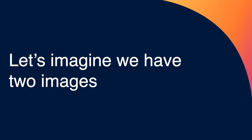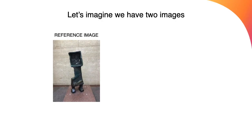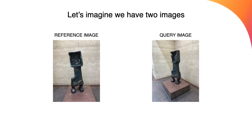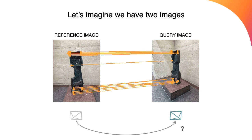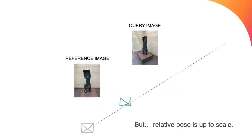Let's imagine we have two images, the reference and the query, and we want to compute the relative pose between them. Following a classical approach, we could find keypoint correspondences and compute the essential matrix from which we can obtain the relative rotation and translation. However, that relative pose is up to scale — we don't know whether those images were taken 1 or 10 meters apart.